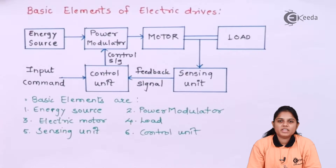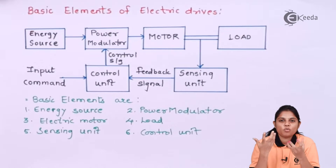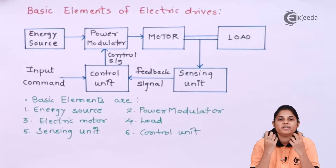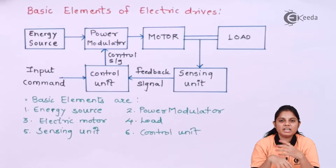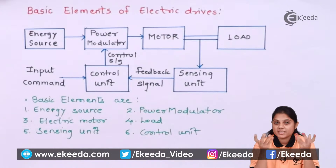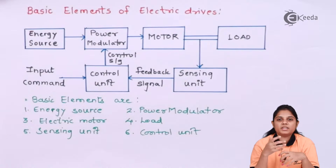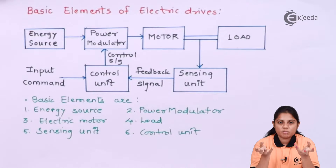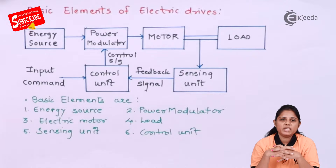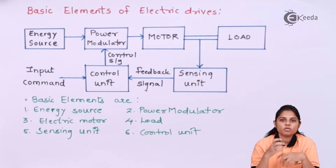Before we start with the electric drive element, let me tell you what a drive is. We are studying industrial electronics, meaning we are dealing with different kinds of industrial and domestic applications. For example, industrial applications such as hydraulic pumps, machines, hydraulic machines, gas turbines, and steam turbines. For domestic applications, you can take a washing machine. These are the different applications where we need to control the speed of the motor.